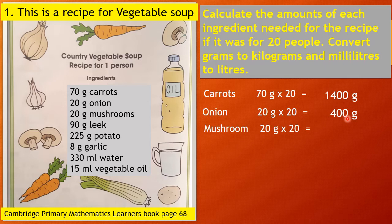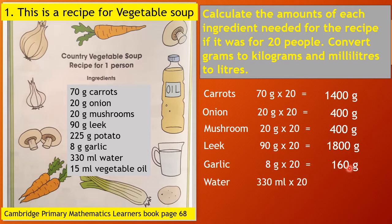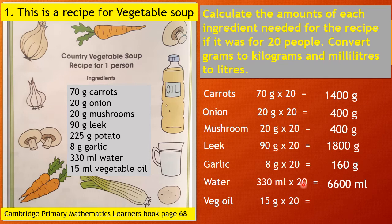Next one is leek: 90 grams times 20. Multiply 9 and 2 — 9 times 2 is 18 — then add two zeros, giving 1,800 grams of leek. Next is garlic: 8 grams times 20. 8 times 2 is 16, just add one zero — 160 grams. Water: 330 ml times 20. Multiply 33 times 2 is 66, add two zeros — the answer is 6,600 ml. And the last one is vegetable oil: 15 ml times 20 is equal to 300 ml. 15 times 2 is 30, add one zero — 300 ml.